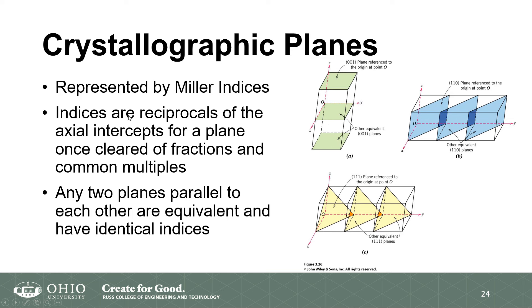Our crystallographic planes are represented by Miller indices, similar to what we did for our directions. In our Cartesian axis, we're going to be dealing with a cubic unit cell specifically. The indices are reciprocals of the axial intercepts. You'll notice that this is a zero-zero-one plane, and planes parallel to it are all equivalent. Similarly, you have equivalent one-one-zero planes and equivalent one-one-one planes. As you have more non-zero indices, the shape of the planes changes.